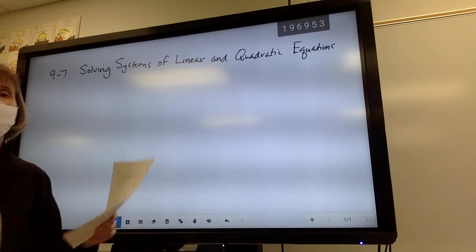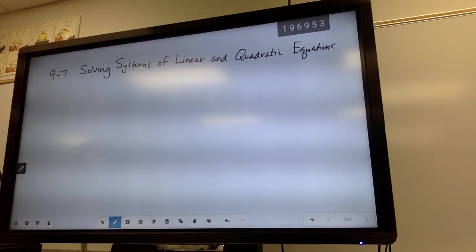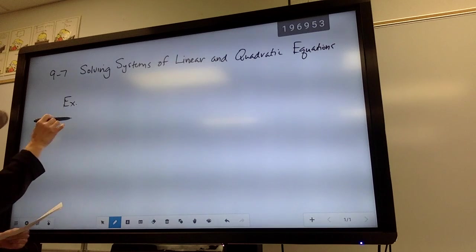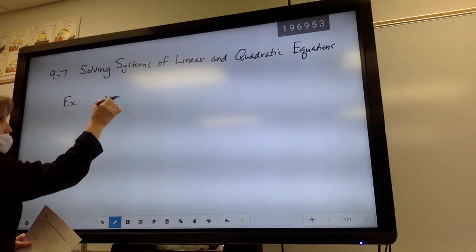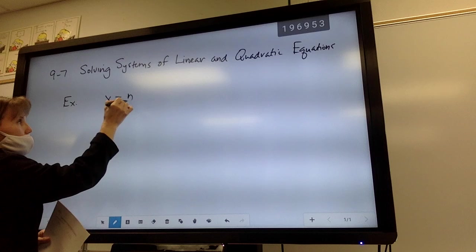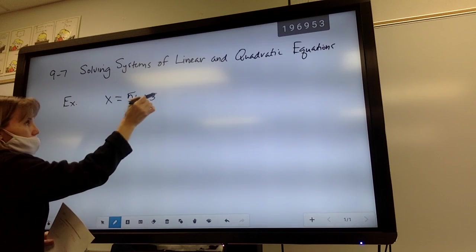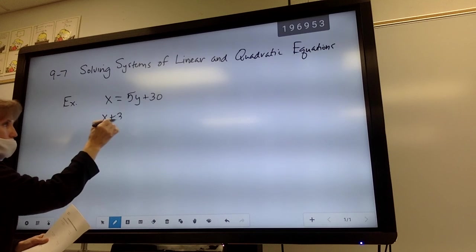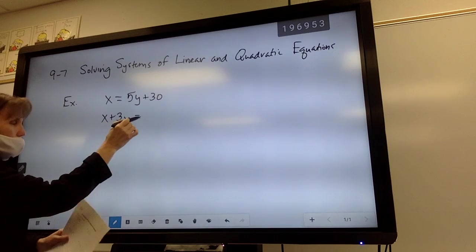All right, so we're going to talk in 9-7. This is the last section for Chapter 9, Solving Systems of Linear and Quadratic Equations. Back in semester 1, you may have been given a problem that said x equals 5y plus 30, along with x plus 3y equals negative 10.